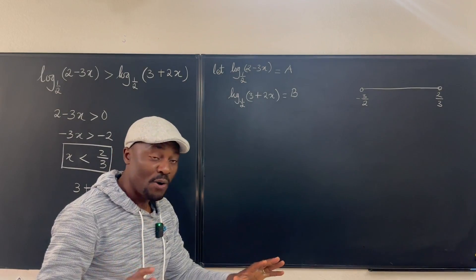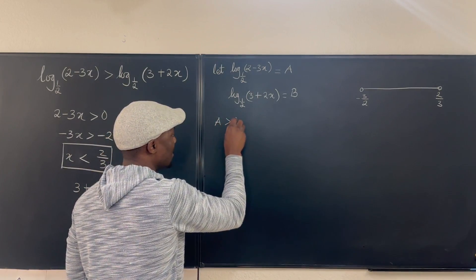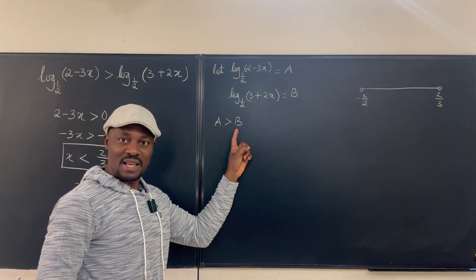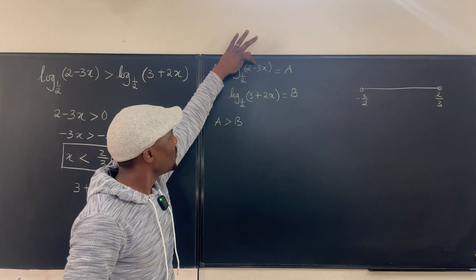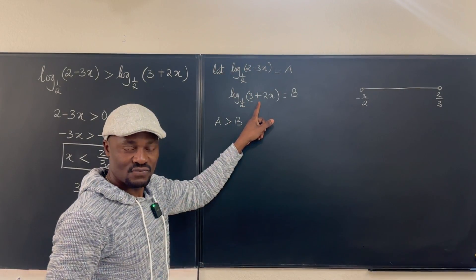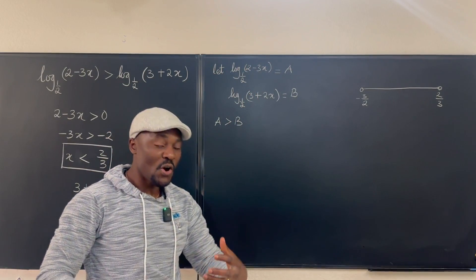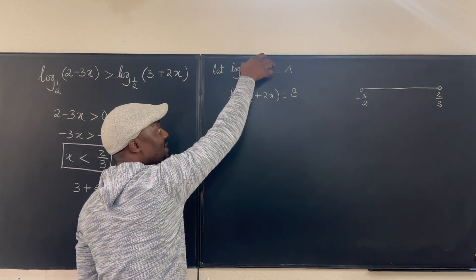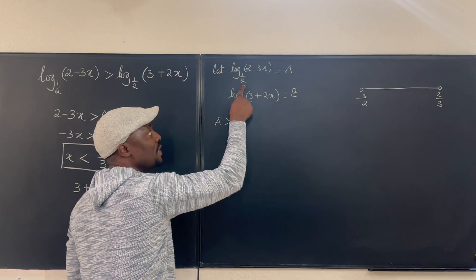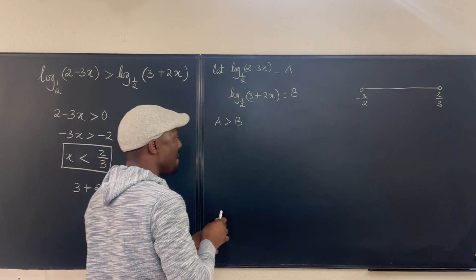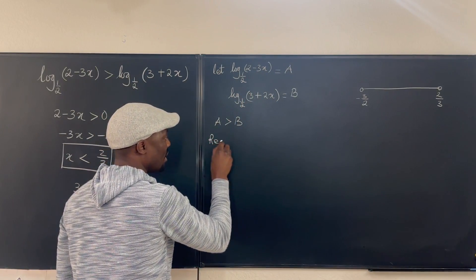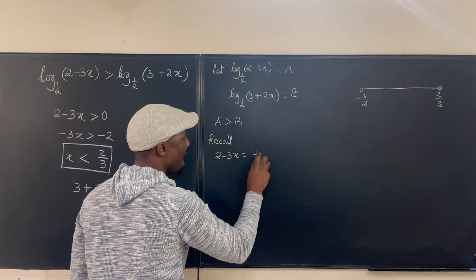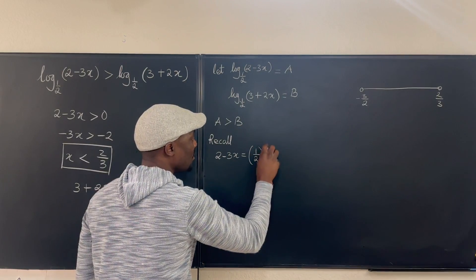From what we know, A is greater than B. This is key to solving this. If A is greater than B, what do you think is the relationship between this and this and this? Remember, the definition of any logarithmic function is that the number you have here is the power, this A is the power to which you must raise one half to get this. So remember, recall that 2 minus 3x equals one half raised to power A.